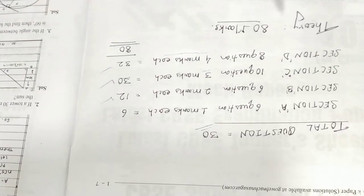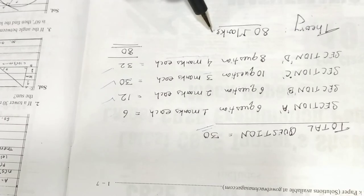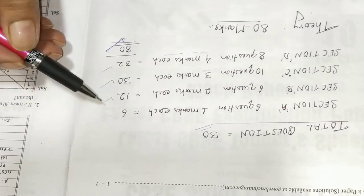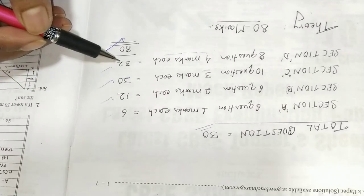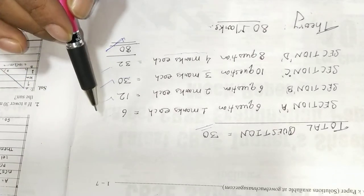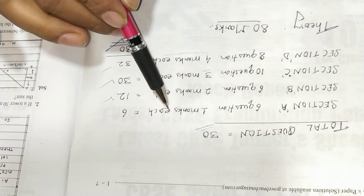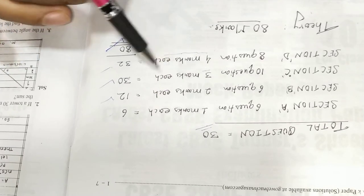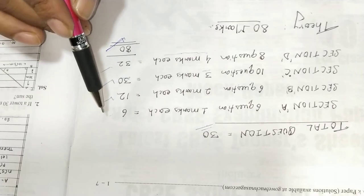So total in theory you will have 80 marks and this is very important. How to prepare for this? I have already shown in my previous video from each chapter the 1 mark question, 2 marks question, 3 marks question, 4 marks question each has been explained in my previous video.